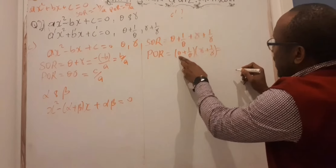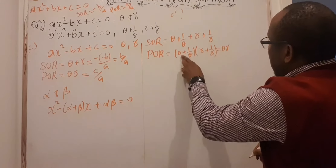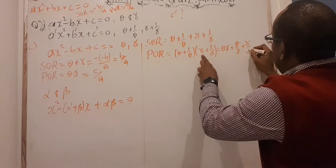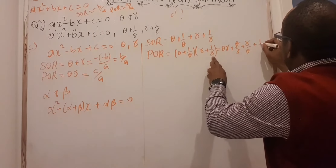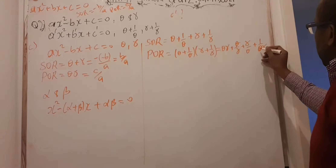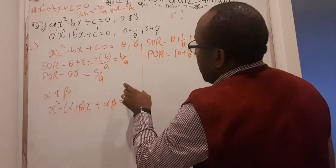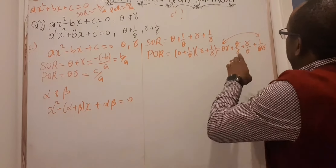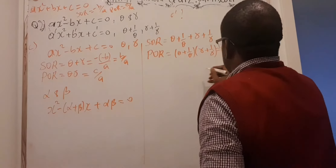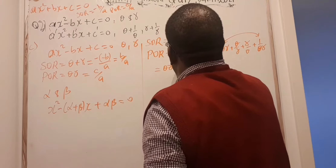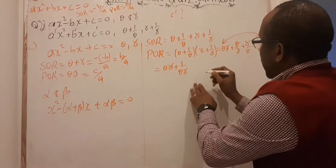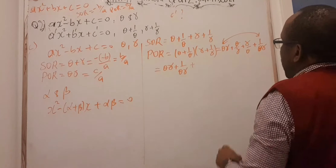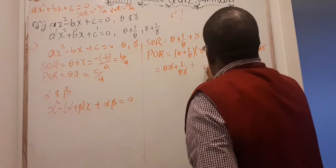If you multiply this out, you get: θ·γ + θ/γ + γ/θ + 1/(θ·γ). I already know θ·γ = c/a and 1/(θ·γ). What I have to fix is the middle part: θ/γ + γ/θ. I can look for a common factor for these two — taking their product gives (θ² + γ²) all over θ·γ.